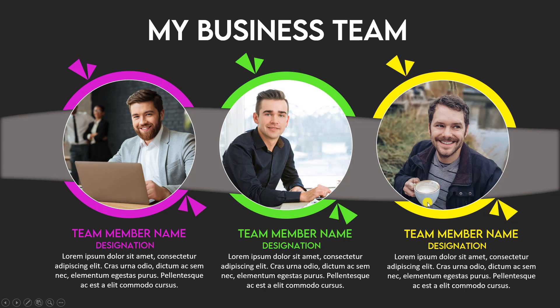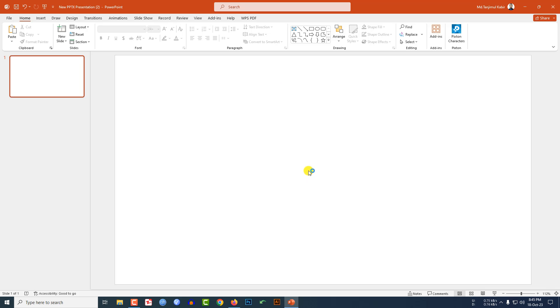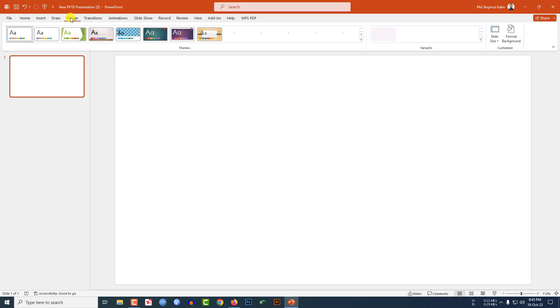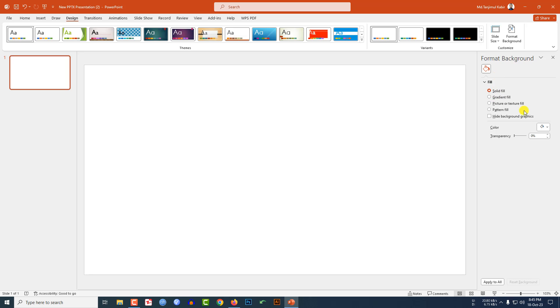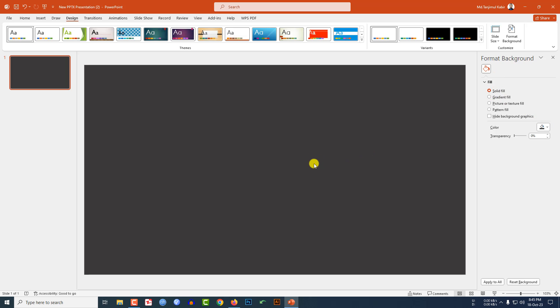In this tutorial, let me show you how I made this beautiful theme slide in Microsoft PowerPoint. If you want to be an expert, watch the video till the end. I have already taken a blank slide. Let me go to Design, then Format Background, go to Solid Fill, and select this color as the background.